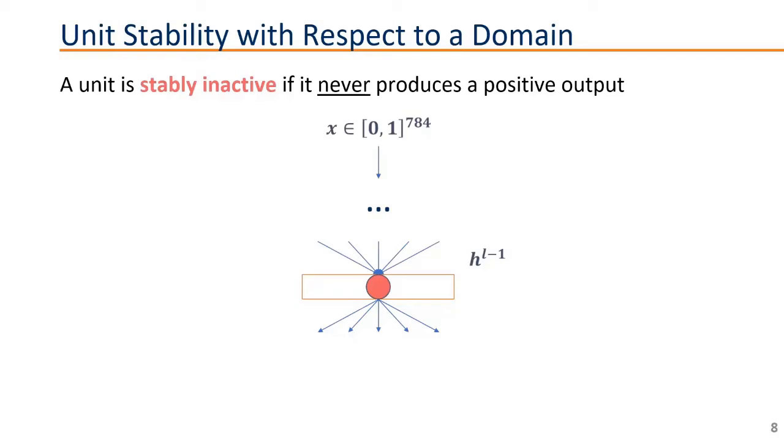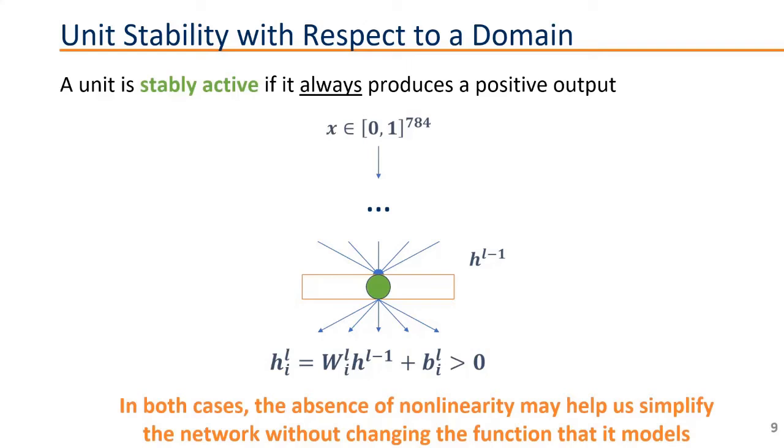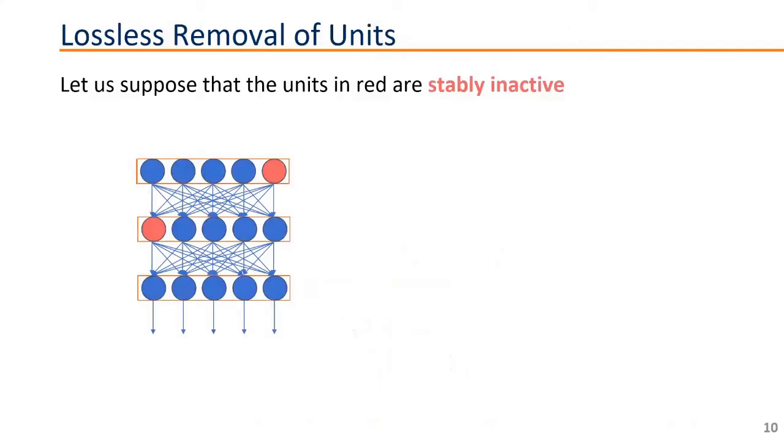For example, we can have a stable inactive unit. In that case, we have a unit that never produces a positive output. So for any relevant input for us, for example, in MNIST, any 0-1 vector in 784 dimensions, if we just send anything like that through the neural network, and we always get an output of 0 from our particular unit, no matter what, that means that the unit is stably inactive. Conversely, we can say that the unit is stably active if, no matter what input we sent through the neural network, the output of this unit is always positive and given as a linear transformation based on the weights and the bias of that unit. In both of these cases, the absence of nonlinearity in the unit, because that maximum between 0 and the linear transformation is not really there. We're either always mapping everything to 0 or everything to the linear transformation. That means that we can actually simplify the neural network.